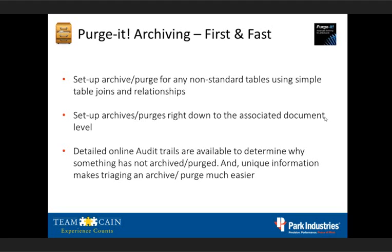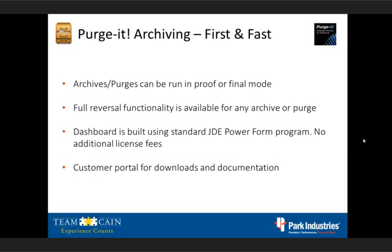There are detailed online audit trails as well. If something is held up because an old sales order is open, Dan can get an email letting him know what that is. He can send it directly to the individual whose responsibility it is to close a sales order, instead of him having to run around and figure it out. There's an explanation for every reason why something won't archive or purge, making it very simple to delegate that responsibility to the individual whose job it is to help close that batch. Archiving and purges can be run in proof or final mode — the controller can have peace of mind with full reversal functionality for any archive or purge.